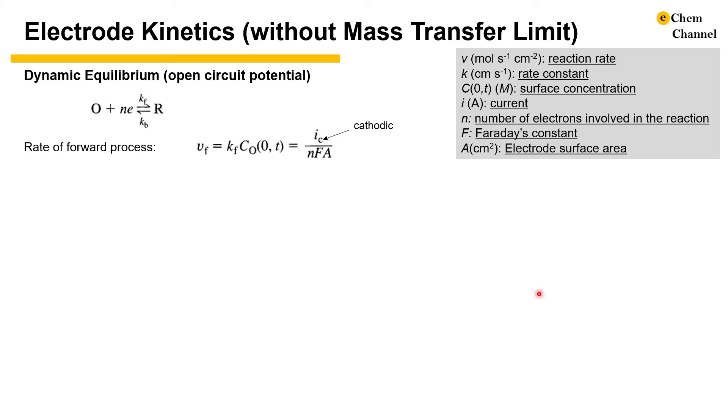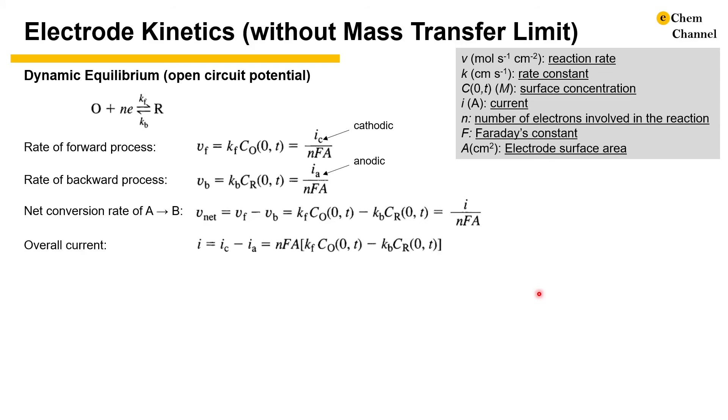More conveniently than homogeneous kinetics, now the rate of reaction can be monitored by the current. Because a reduction reaction corresponds to cathodic current, we have a subscript C associated with the current. Equations for backward reaction and net conversion can be laid out in a similar way. The overall current for the net conversion is then the subtraction of the cathodic and anodic current.